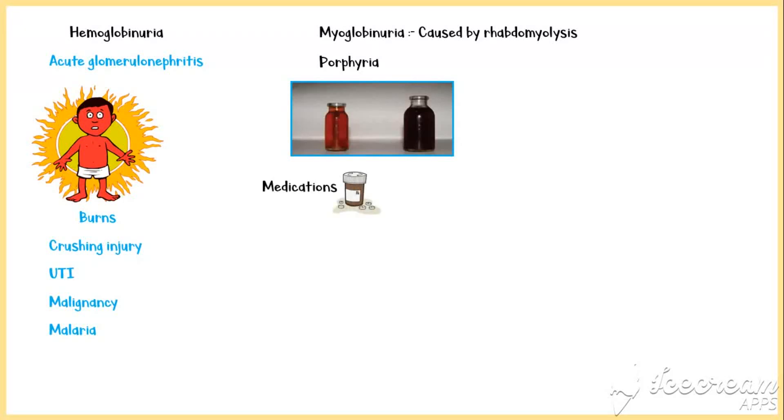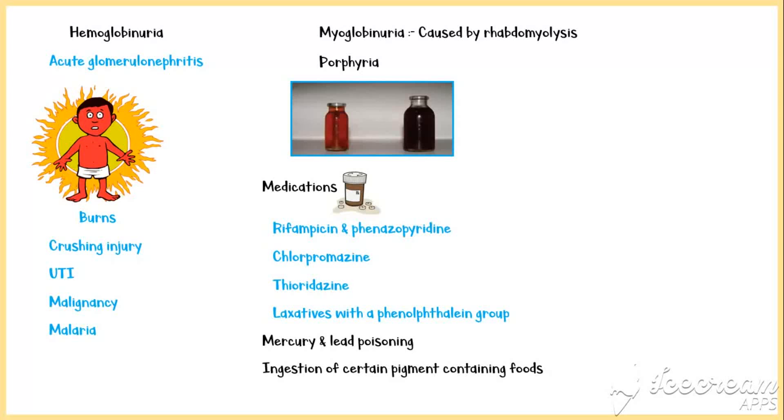Medications that are known to cause red urine include rifampicin and phenazopyridine, chlorpromazine, thioridazine, and laxatives with the phenolphthalein group. Both mercury and lead poisoning have also been implicated in red urine discoloration. Other more benign causes of red discoloration are related to the ingestion of certain pigment-containing foods, such as beetroot.